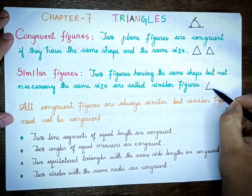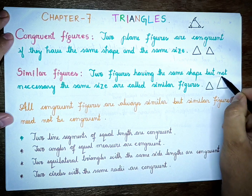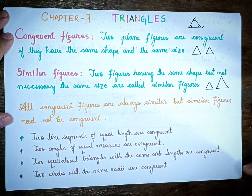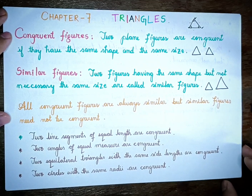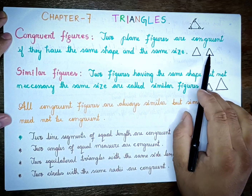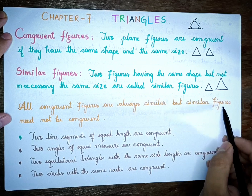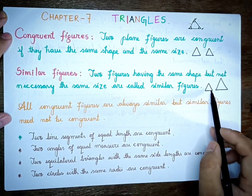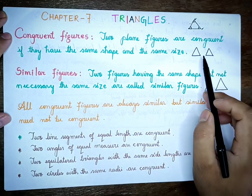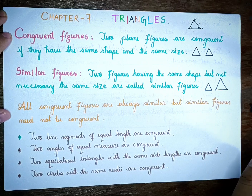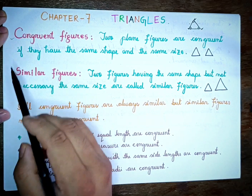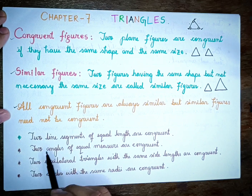For example, similar figures share the same shape. All congruent figures are always similar. Congruent figures are similar figures, but similar figures need not be congruent. You can say that congruent figures are similar figures, but similar figures are not necessarily congruent.